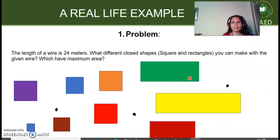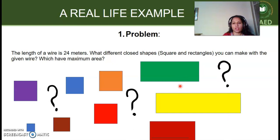Here, I am giving you a real life example to understand the scenario of problem solving loop. Number 1 point is problem. At step 1, you have to identify the problem. So, here we have got a real life problem which states that the length of a wire is 24 meters. What different closed shapes, squares and rectangles can you make with the given wire which has maximum area? Now, here you can see that we can draw or make squares and rectangles of different areas. However, we have to find what is the shape which has maximum area.